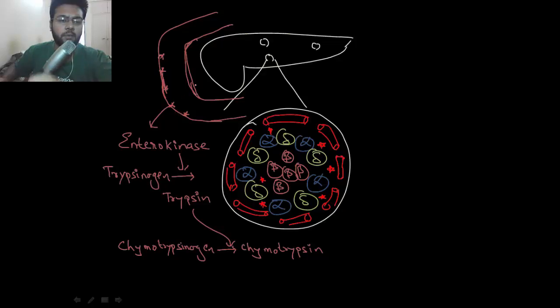The cells of duodenum release an enzyme called enterokinase which converts trypsinogen into trypsin, which in turn converts chymotrypsinogen into chymotrypsin. And from where does the trypsinogen come from?